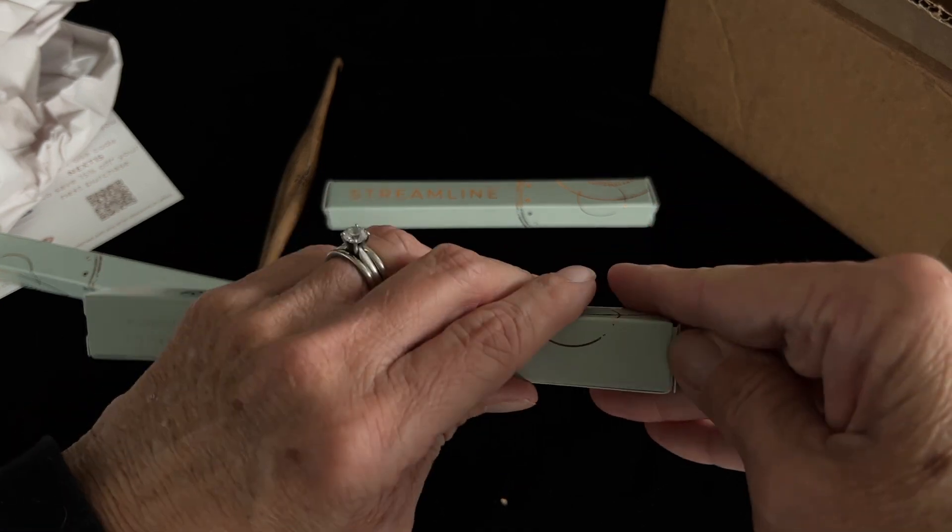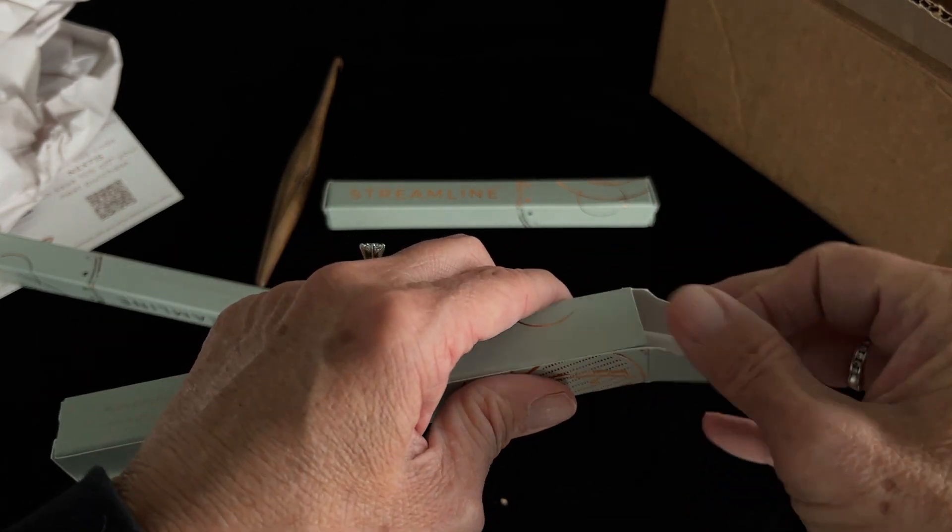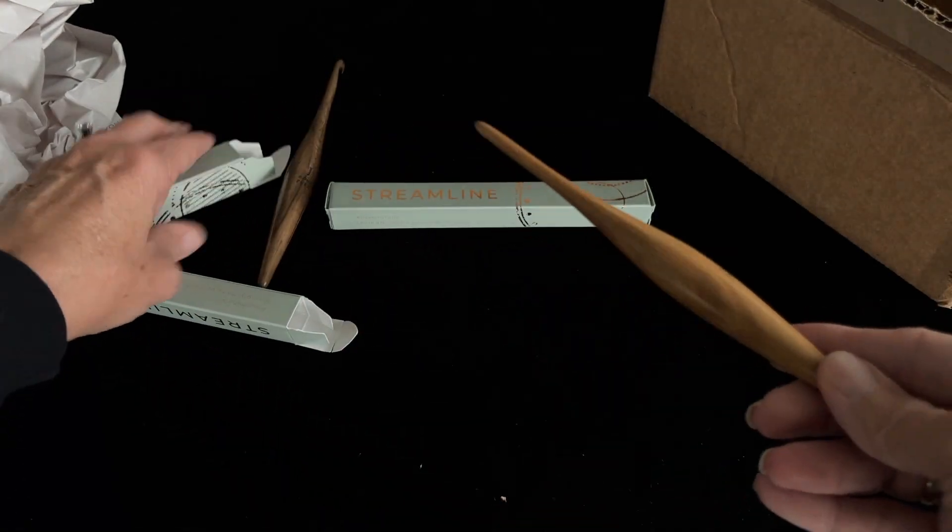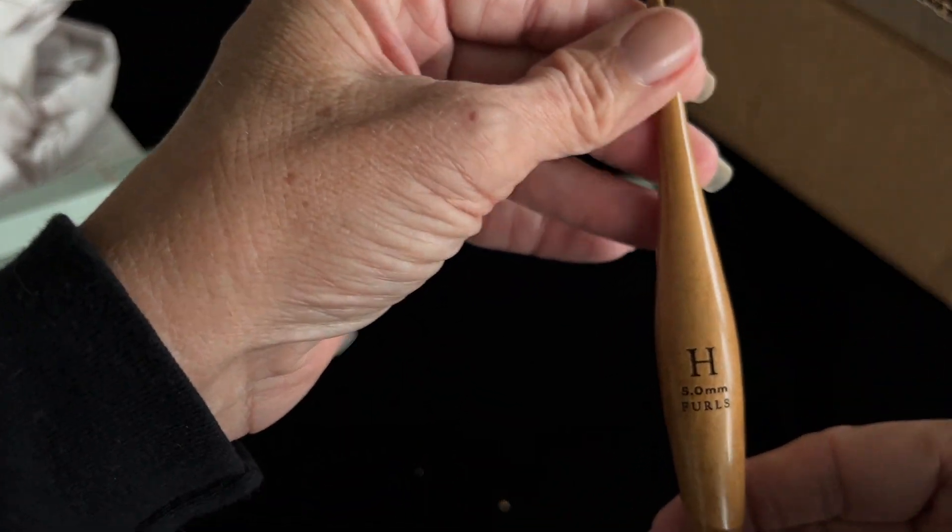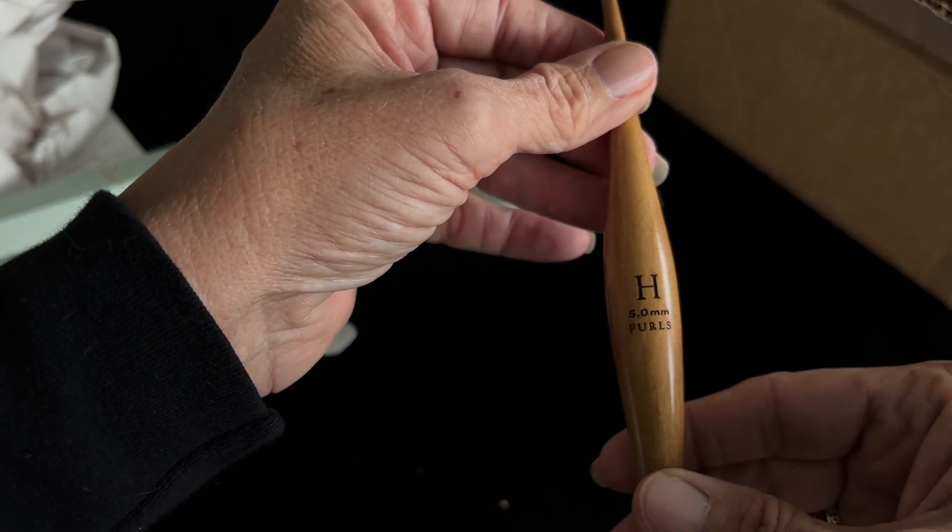And the next one. They did have a special going on. It was buy two get one free and a couple other things going with it. Different kind of wood. It's an H hook, which is the 5.0.